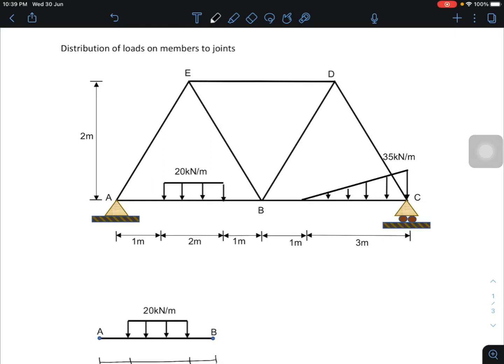Today I would like to show you how to transfer loads on members to joints. If you refer to member AB, this member is loaded with a uniformly distributed load of 20 kN at the center of this member with a distance of 2 m. Then member BC is loaded with a linear load of 35 kN per meter at 3 m from joint C. For truss analysis, we need to transfer these two loads to specific joints.